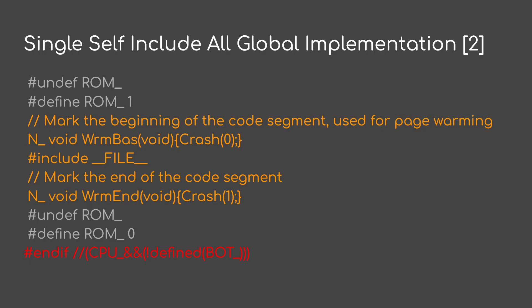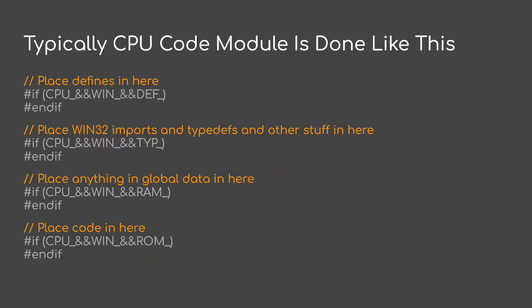Once we get done with that section, now we have the CPU code. Typically, I set up the CPU code in different modules. Each module, if it has defines, imports, code, or data, they all get put in these pound-if sections. This one's showing an example for stuff that runs on Windows only.